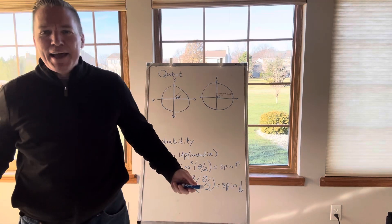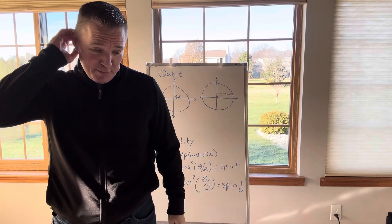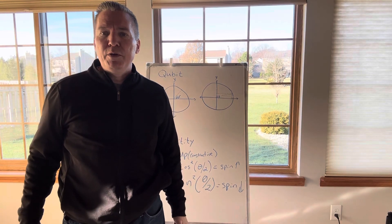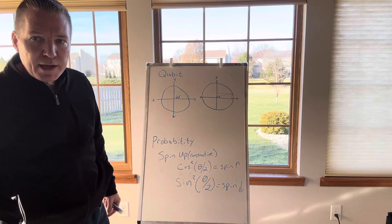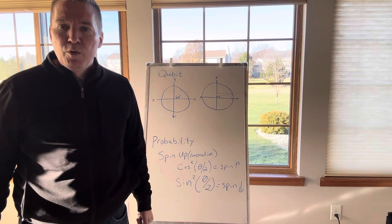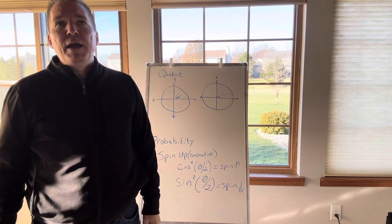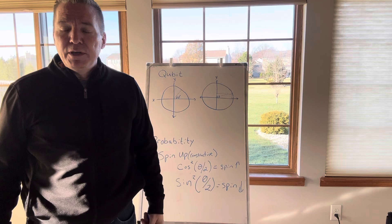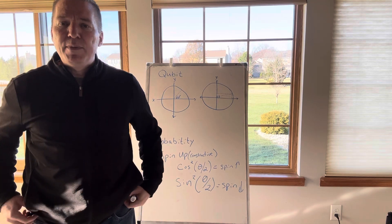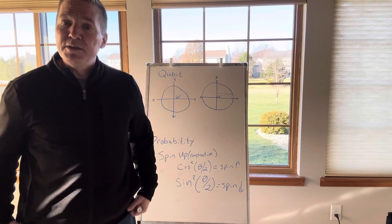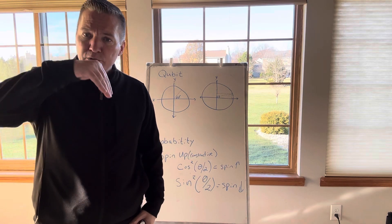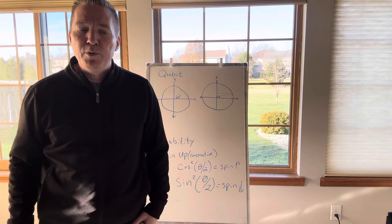Hi guys, sorry for the lack of a professional setup here, but I wanted to go over some equations with you. I know in my videos I'm always talking about black holes and how it shows where gravity comes from and how you unify gravity with quantum mechanics — where quantum mechanics describes probabilities of things occurring and general relativity describes the curvature of space-time or gravity.